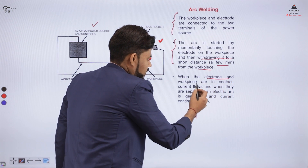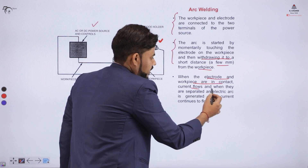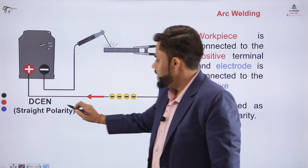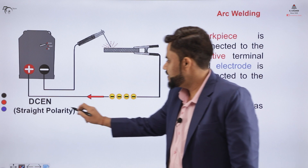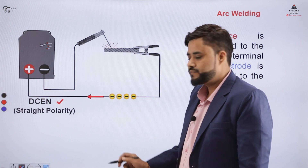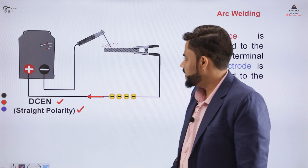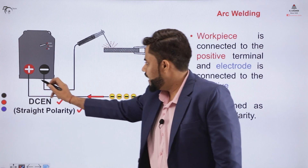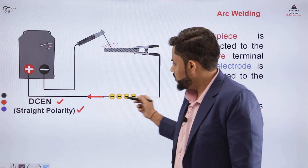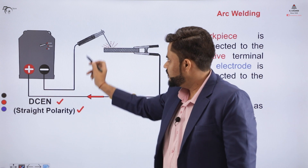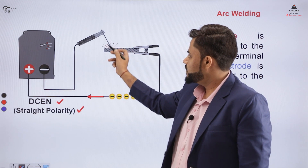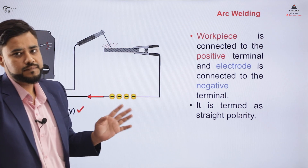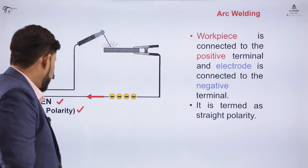The electrode and the workpiece are in contact with each other, and the current flows when they are separated. Coming to the connections — the connection you are seeing on the board is the direct current electrode negative combination, which is called straight polarity. In this combination, the electrode is connected to the negative terminal and the workpiece is connected to the positive terminal. Electrons flow from the negative terminal toward the positive terminal, going into the workpiece when the connection is made. This setup is called direct current electrode negative, or straight polarity.